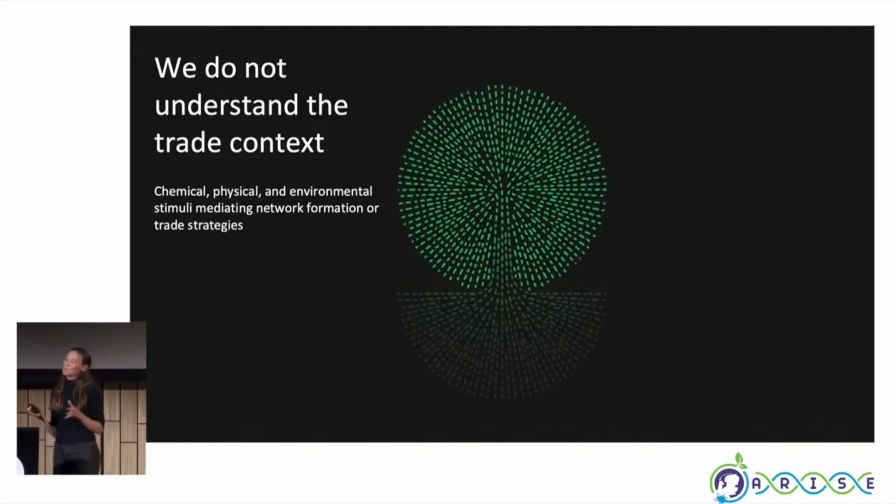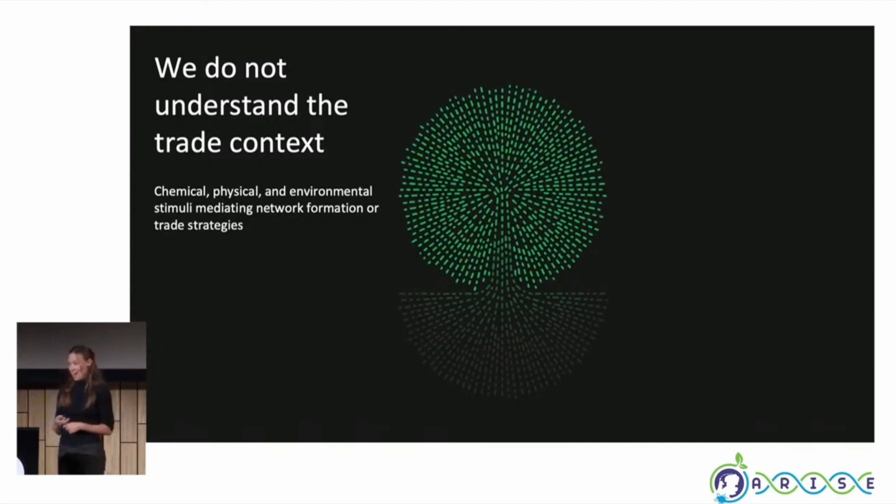The problem is that we've been very focused on looking at fungal networks in a laboratory setting, which means we don't really understand the context of trade. Trade strategies are predicted to shift even with a small change in available soil resources, how fast a plant is growing, or how much photosynthesis is happening above ground. Bringing up that type of complexity is very difficult — we don't understand the chemical, physical, and environmental stimuli that are actually mediating these trade strategies.